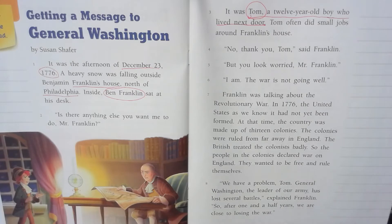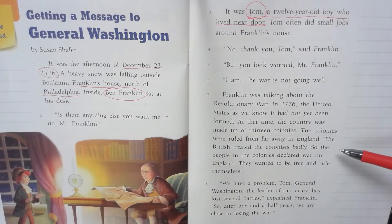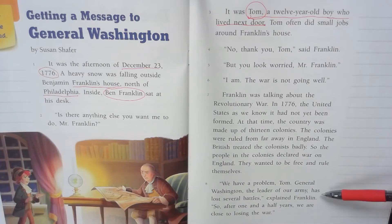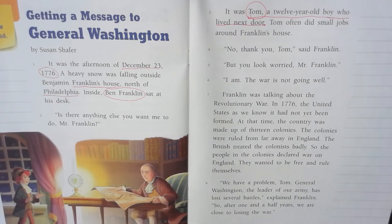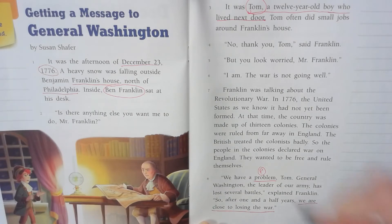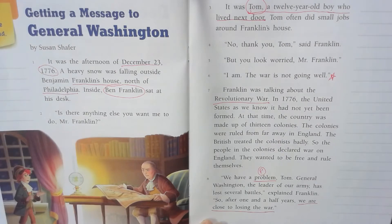No thank you, Tom, said Franklin. But you looked worried, Mr. Franklin. I am — the war is not going well. Franklin was talking about the Revolutionary War. In 1776, the United States as we know it had not been formed. The country was made up of 13 colonies ruled from England. The colonists declared war because they wanted to be free. General Washington, the leader of our army, has lost several battles — we are close to losing the war. So here is our problem: we are close to losing the Revolutionary War.